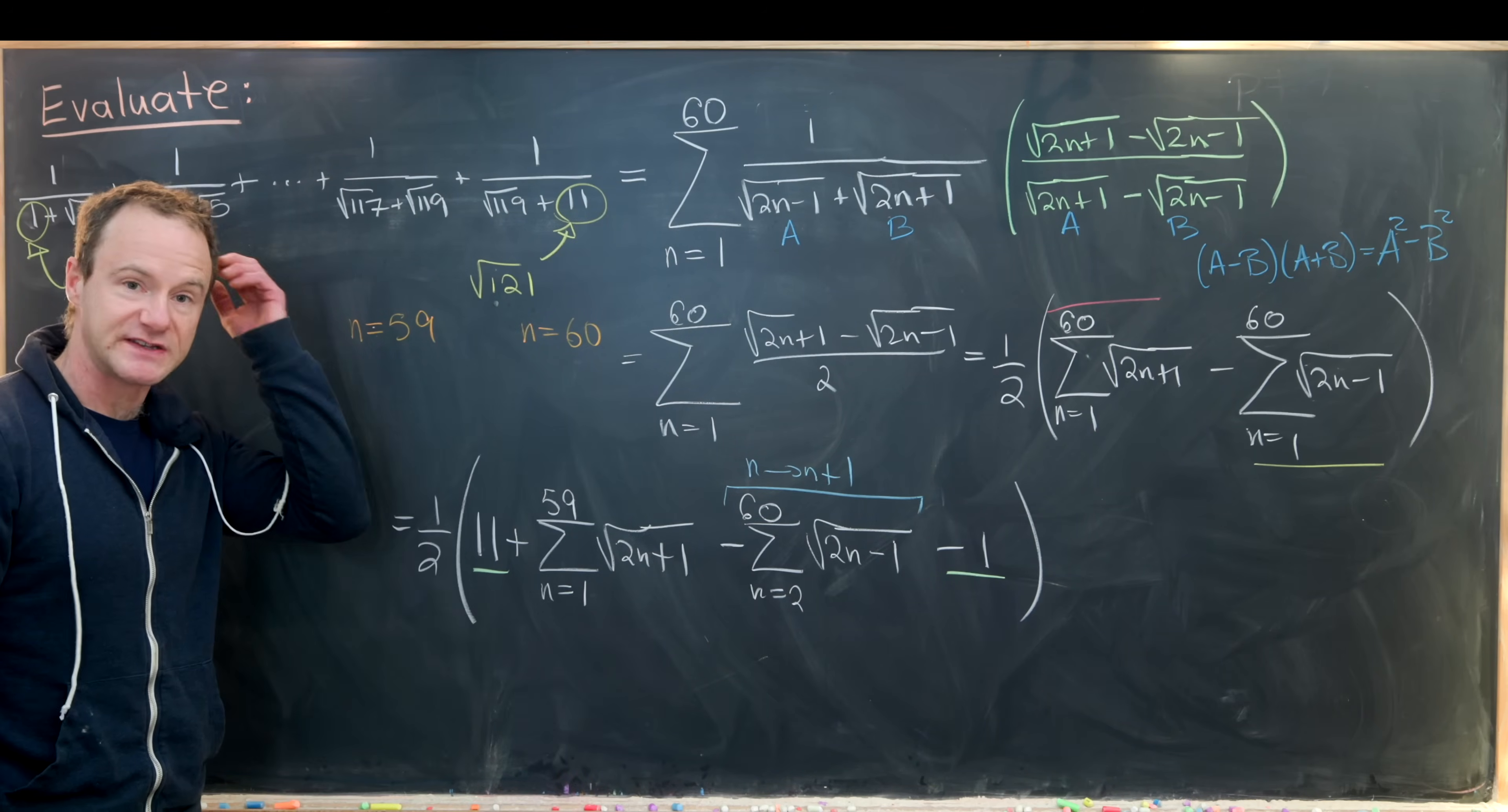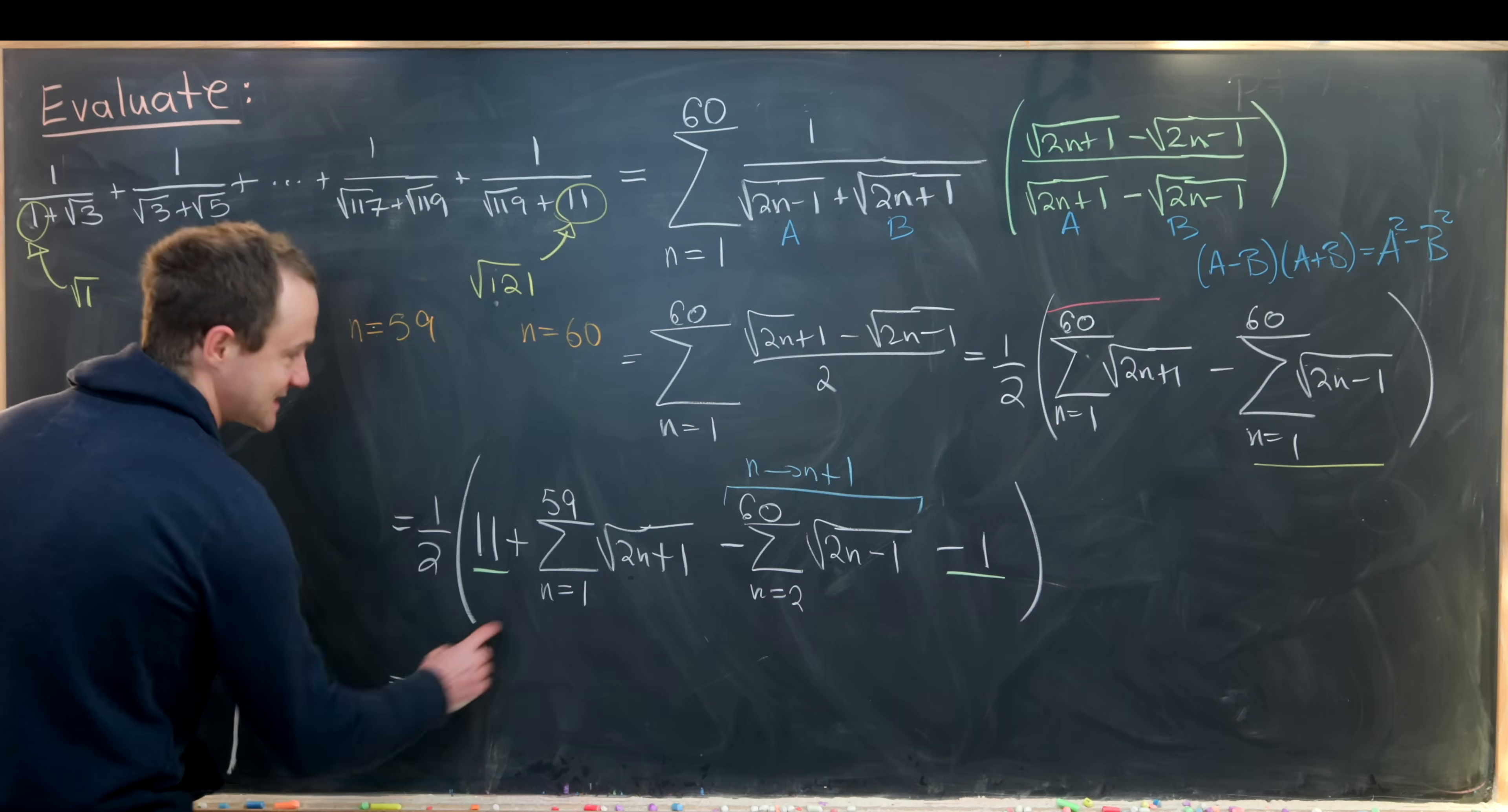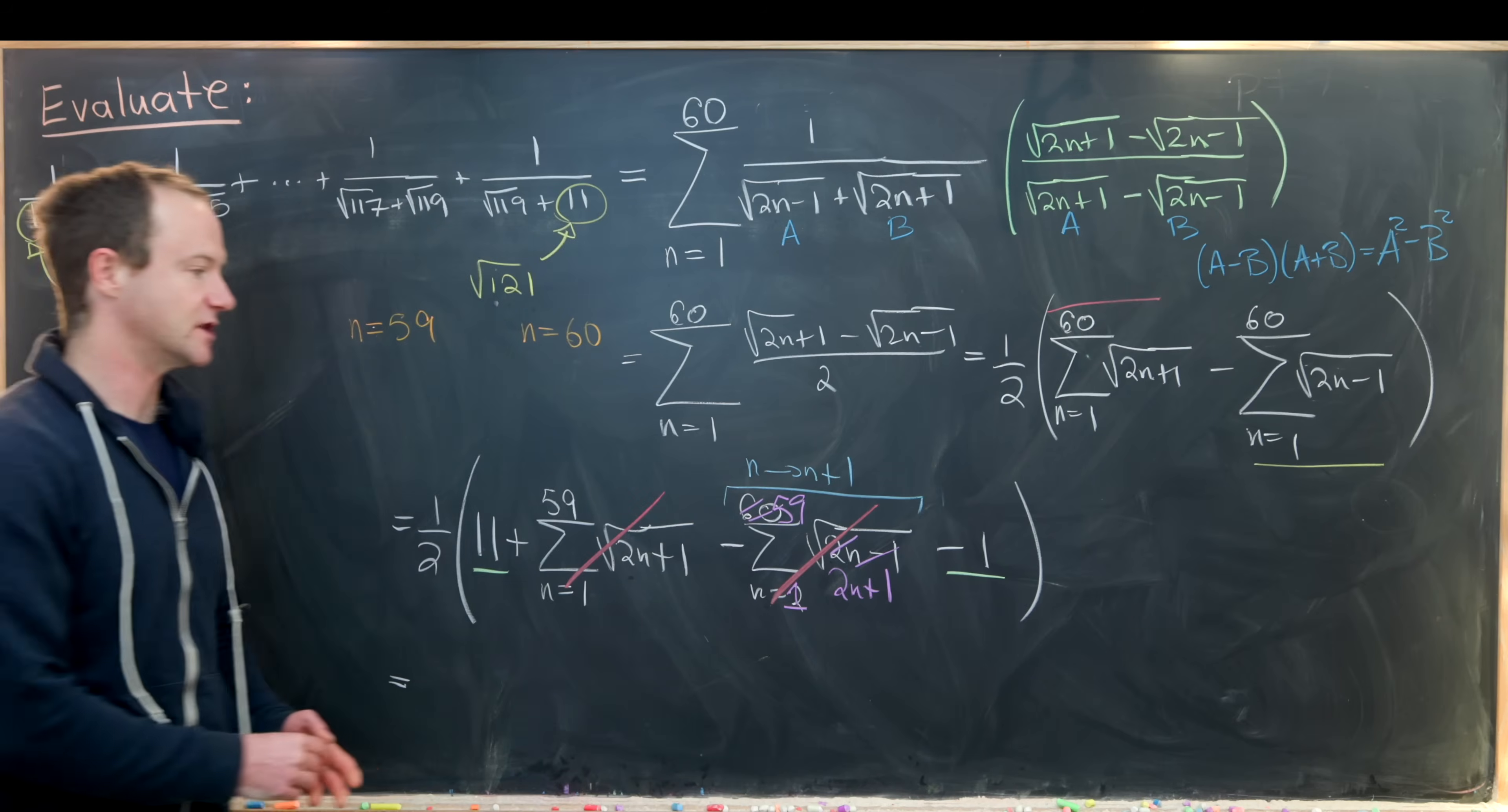We'll replace all the n's with n+1's. That's going to change 2n - 1 to 2n + 1. When n+1 = 2, n = 1, and when n+1 = 60, n = 59. That's exactly what we have for this first sum, so those two cancel.